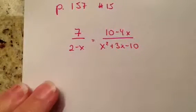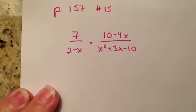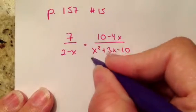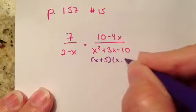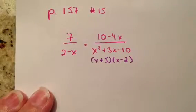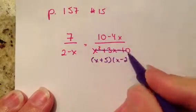Okay, so for this one, first thing we're going to do is we're going to factor out the denominator. So we get x plus 5 and x minus 2. That's our new denominator.